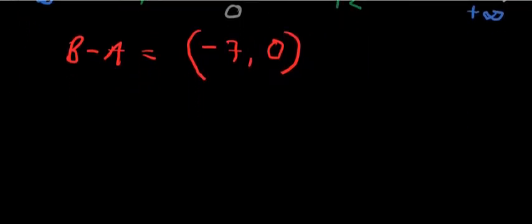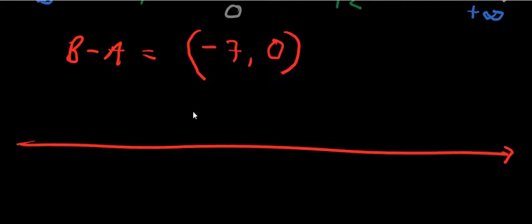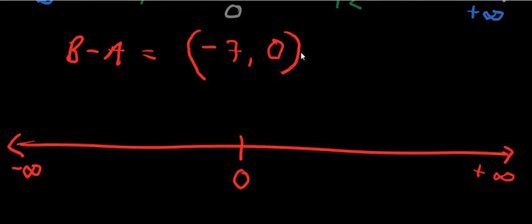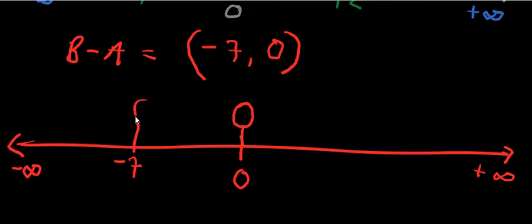Negative 7 is not affected so it maintains the way it is. Therefore B minus A equals open bracket negative 7 comma 0 close open bracket. We can represent this on the number line: place zero and negative 7, use unshaded circles for both since neither is part of the answer, and connect them. That solves B minus A.